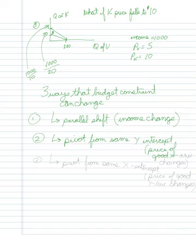Number two: I could have it pivot from the same y-intercept. That would happen if the price of the good on the x-axis changes.